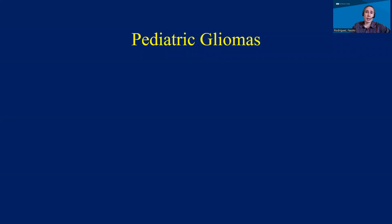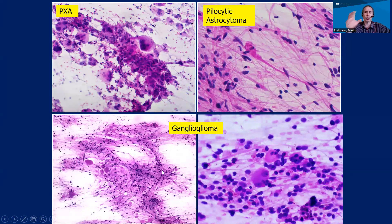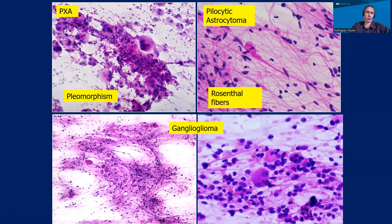Pediatric gliomas are another group of tumors that for a long time we classified very similarly to adult tumors, because histologically some of them look very similar. But we have learned that they are biologically a little different. They also have a wider spectrum of tumors — including pleomorphic xanthoastrocytomas, pilocytic astrocytomas, and gangliogliomas — a variety of tumors overrepresented in the pediatric population and in young adults compared to older adults.